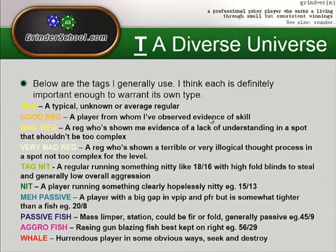A Reg in plain yellow is a typical unknown or average regular. It could be someone I know very little about because they just sat down, but I can tell they're a reg because they're multi-tabling or because I recognize them from a forum, or just by their sizing. It could also be a reg I know loads about — I've played with them for months and have 50 notes on them — but they're still just a Reg: not good enough to be a Good Reg, and not bad enough to be a Bad Reg.